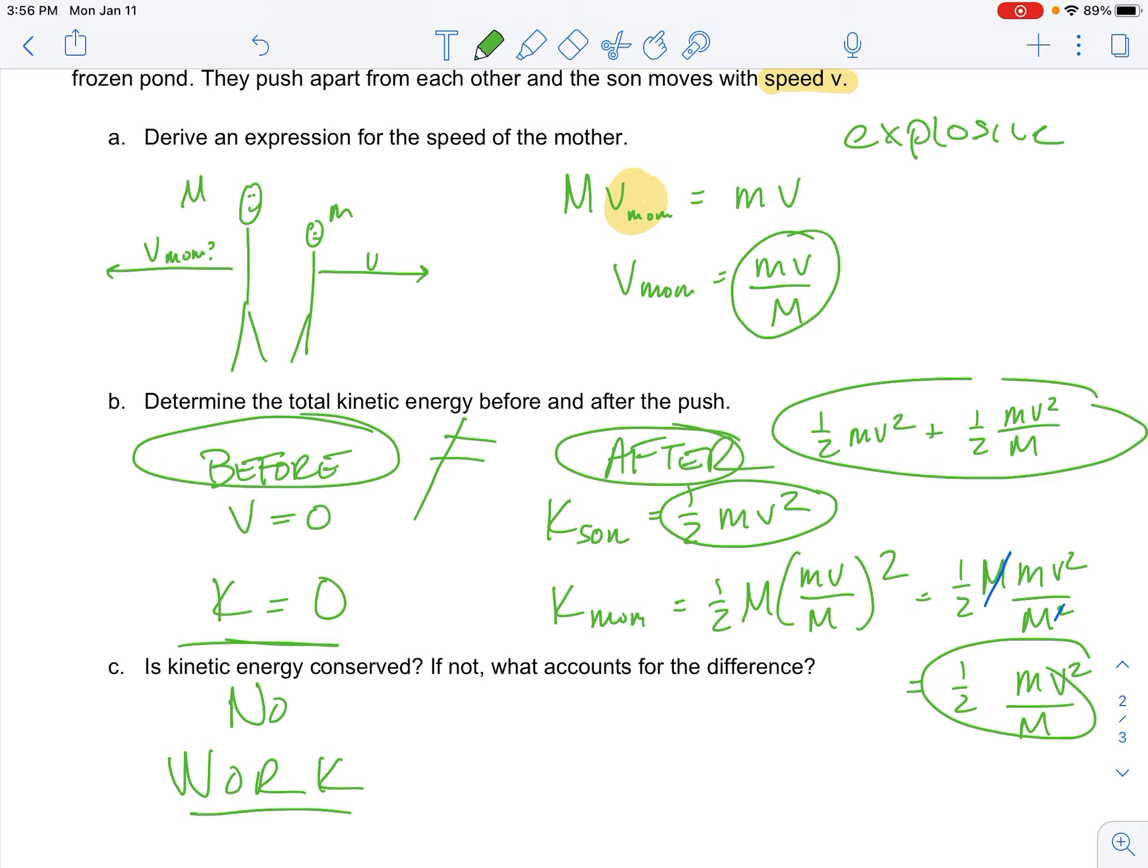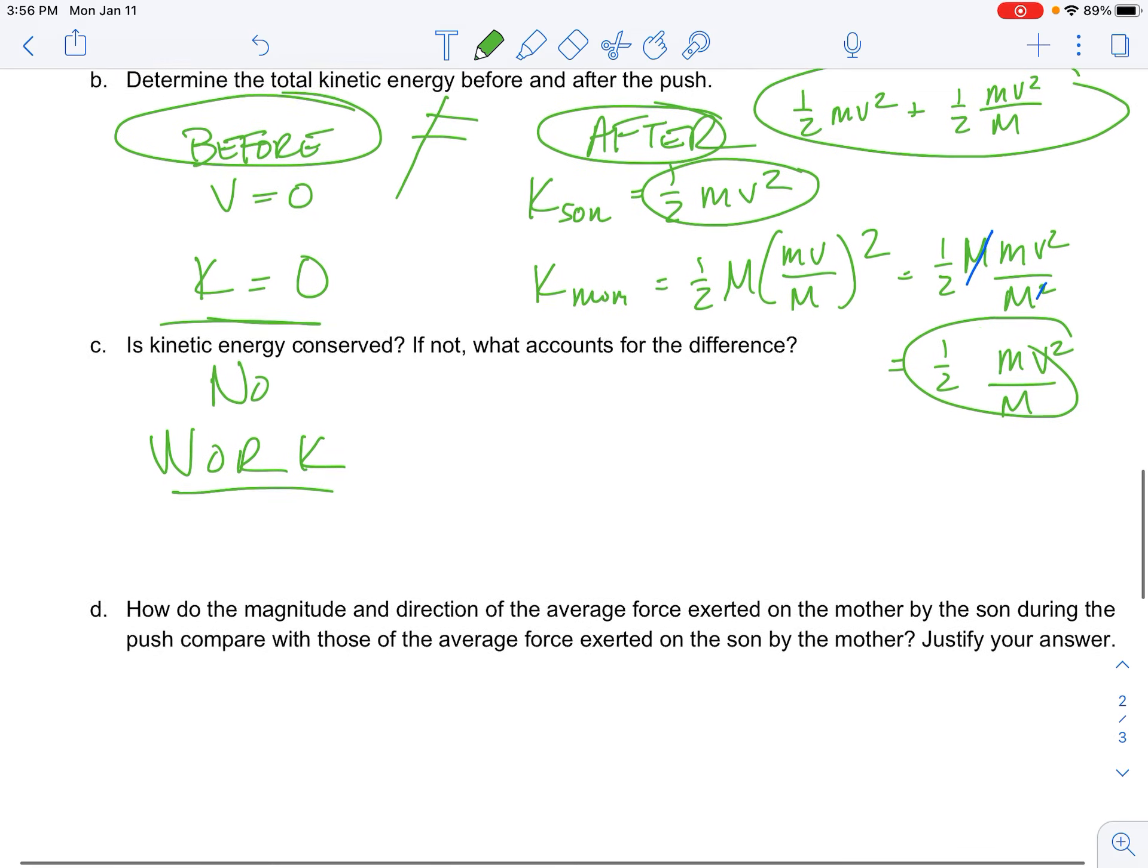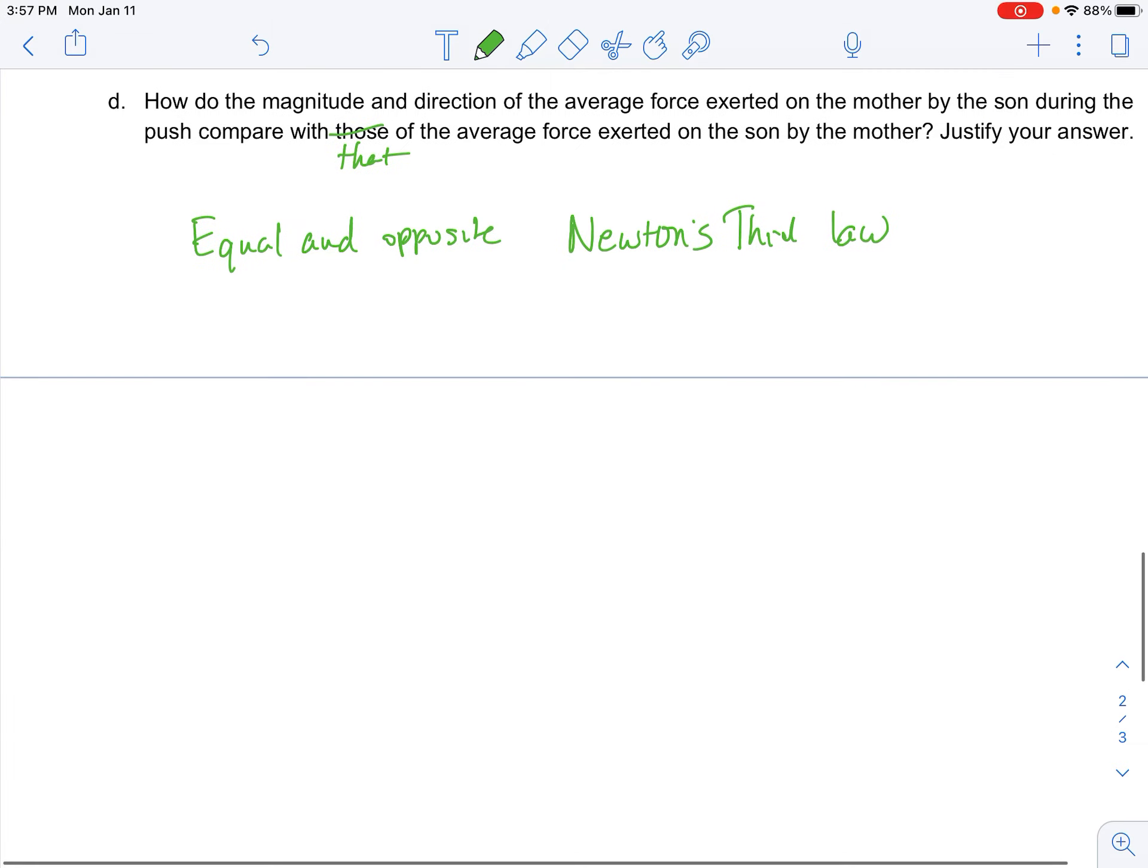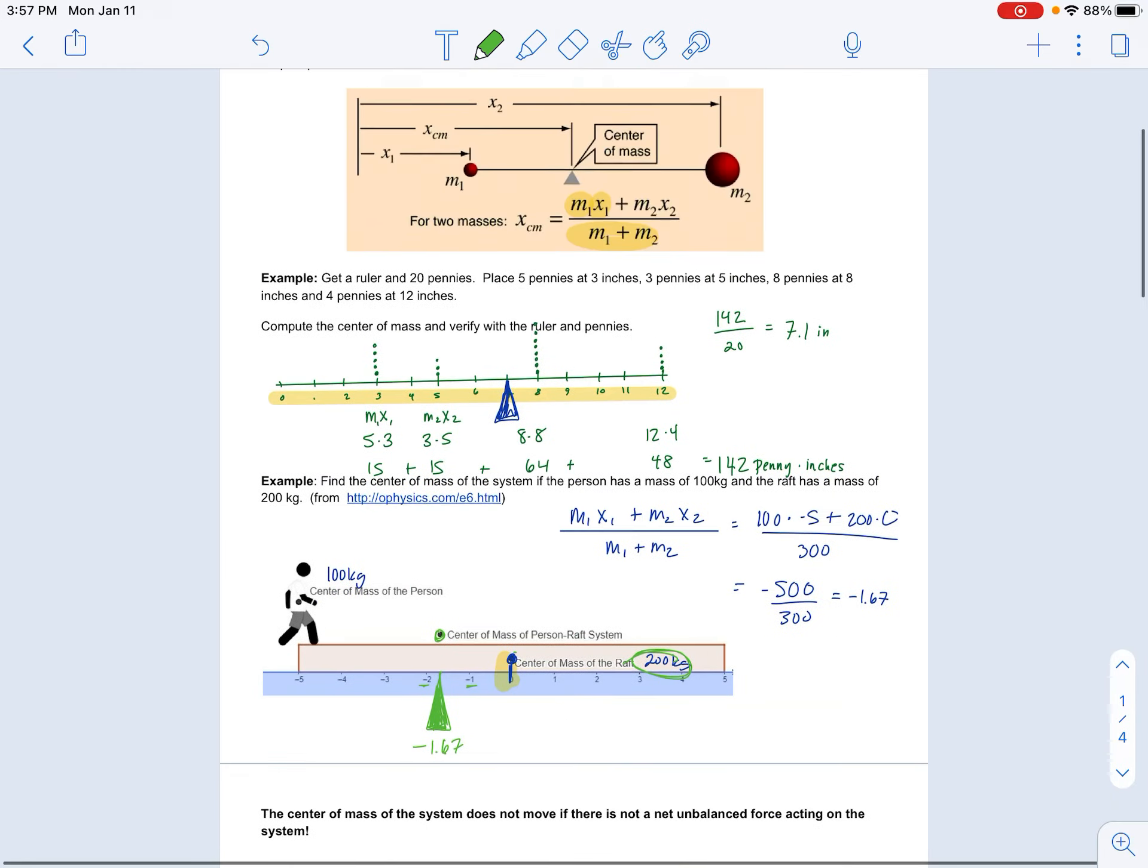How does the magnitude and direction of the average force exerted on the mother by the son during the push compare to that of the average force exerted on the son by the mother? So this is a Newton's third law question. The forces should be equal and opposite. Newton's third law. So the push of the son on the mother should be equal and opposite to the push of the mother on the son. All right. Thank you for listening and I'll see you in class.